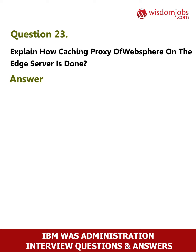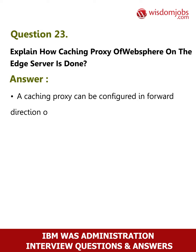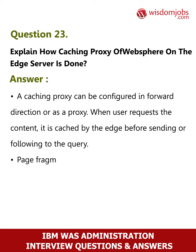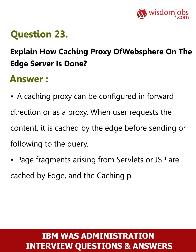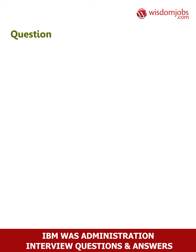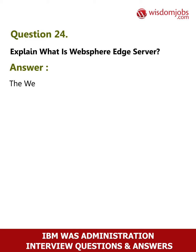Question 23: Explain how caching proxy of WebSphere on the edge server is done. Answer: A caching proxy can be configured in forward direction or as a proxy. When a user requests content, it is cached by the edge before sending or forwarding to the query page. Fragments arising from servlets or JSP are cached by the edge, and the caching process improves performance and scalability, which can be optimized by the edge.